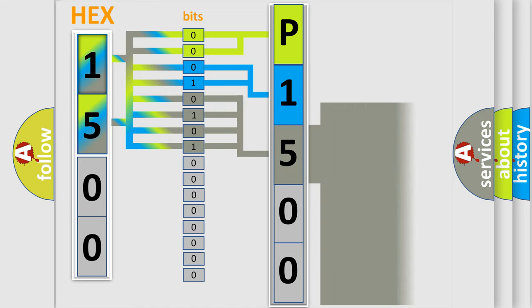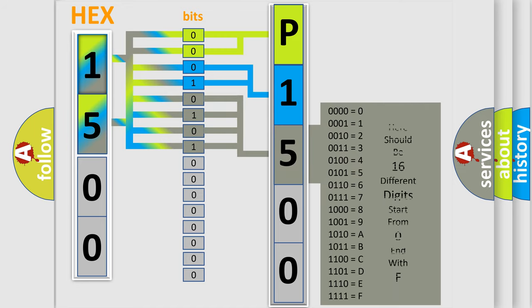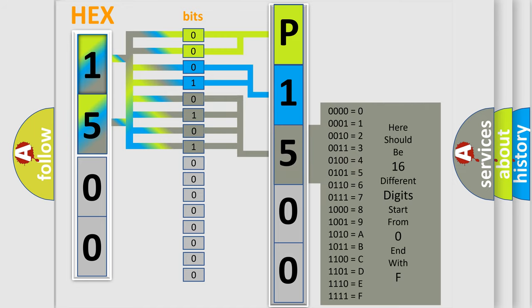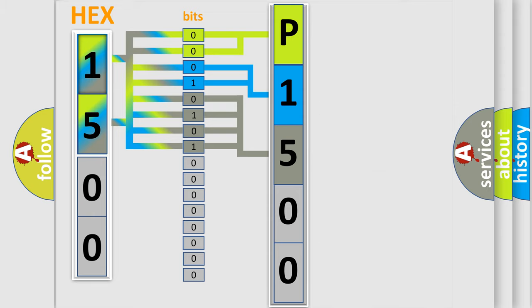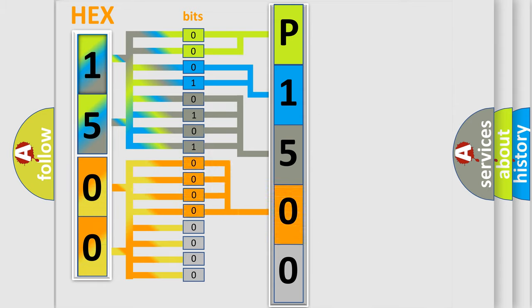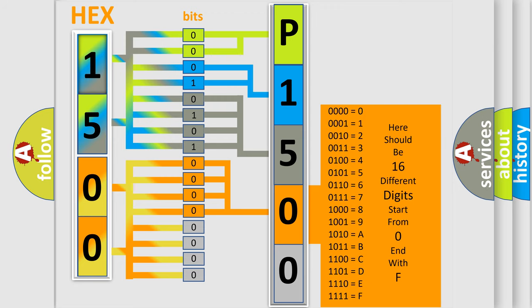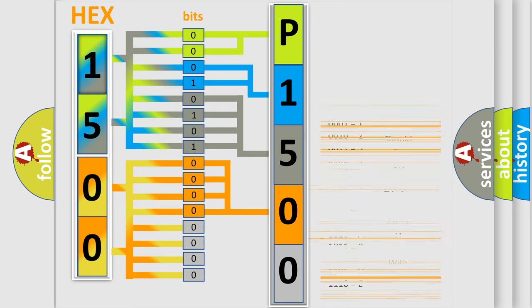The second byte is composed of a combination of eight bits. The first four bits determine the fourth character of the code, and the combination of the last four bits defines the fifth character. A single byte conceals 256 possible combinations.